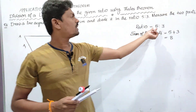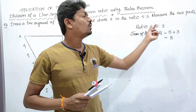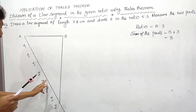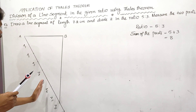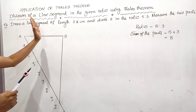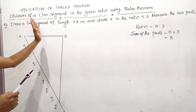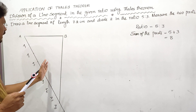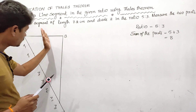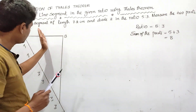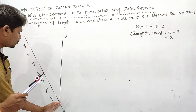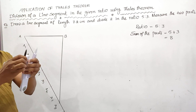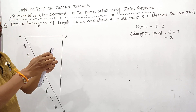After joining A8 and B, the first part in the given ratio is 5, so at the fifth point A5 we have to draw a parallel line to A8B. From the fifth point we have to draw a parallel line to A8B.